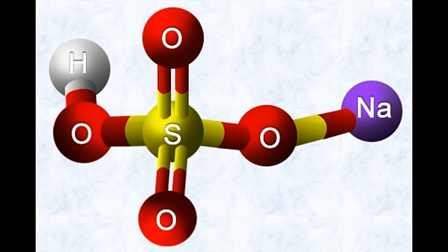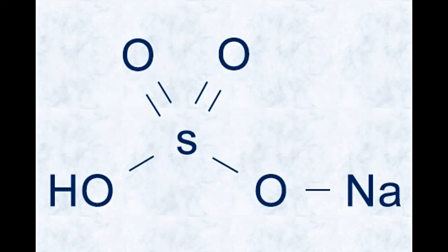For those who may find it slightly difficult to understand the 3D structure, here's a simpler model. Sodium bisulfate is a white powder. The monohydrate form is granular, whereas the anhydrous form is a hygroscopic amorphous powder.